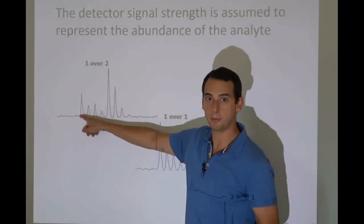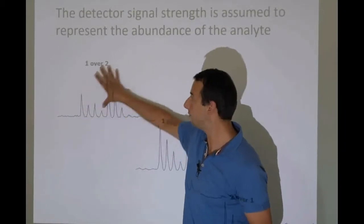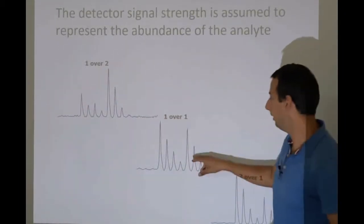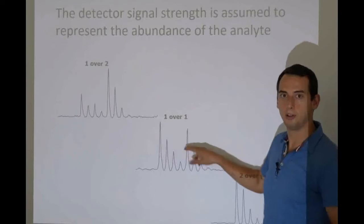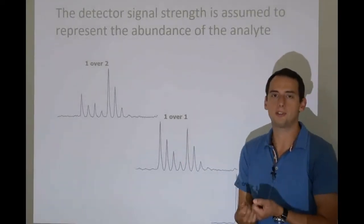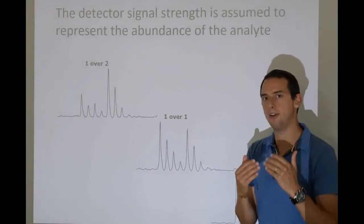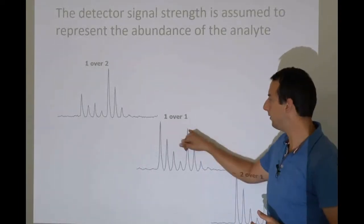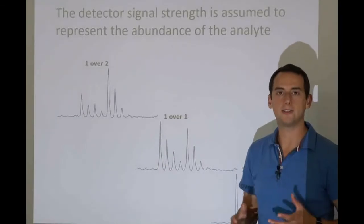We can say if this is say 10 nanograms per milliliter, then this one will be five nanograms per milliliter. You see, because it's half the signal. If the signal would be roughly equal and do notice it's roughly equal. It's not exactly equal. Obviously, there's going to be a little bit of noise. There's going to be a little bit of variation.